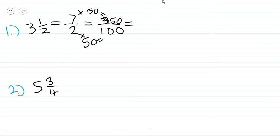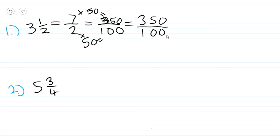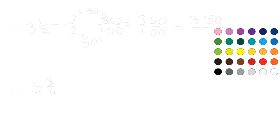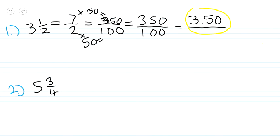The next step is to divide 350 by 100. That's a very simple process. Since 100 has two zeros, we take the invisible decimal point in 350 and jump two places to the left. That gives us 3.50. That's our answer — 3.50 is the decimal equivalent of three and a half.